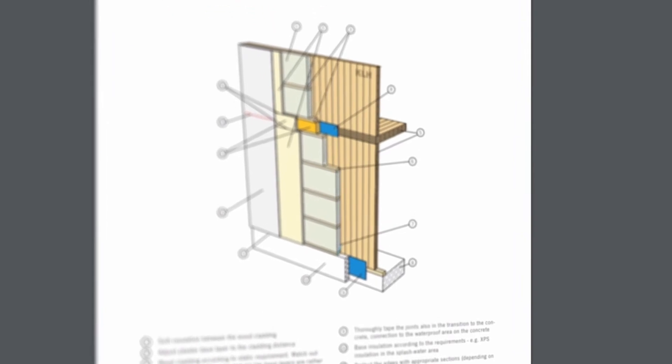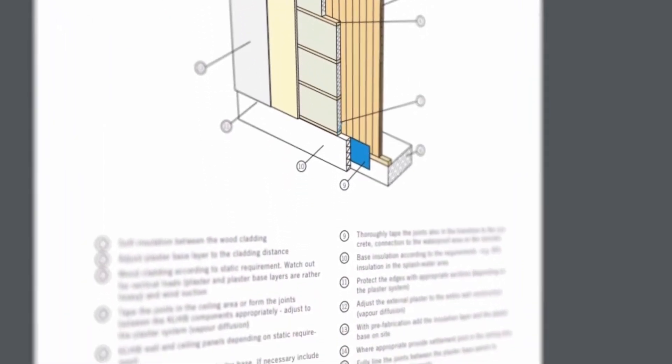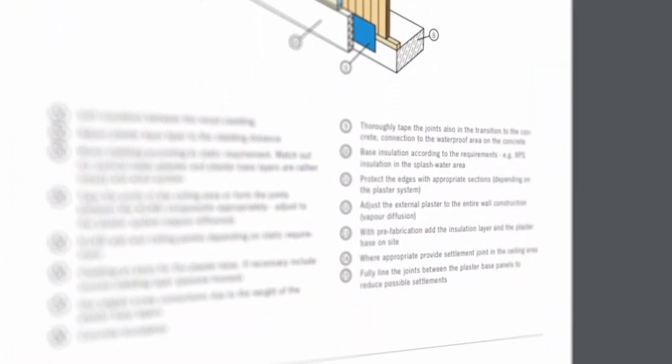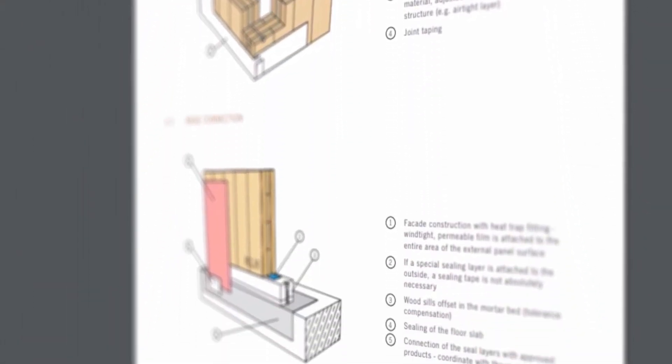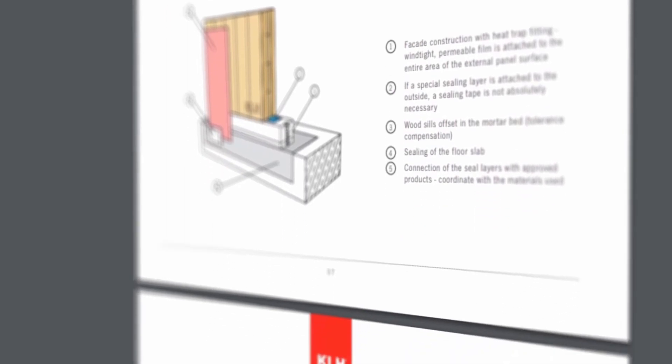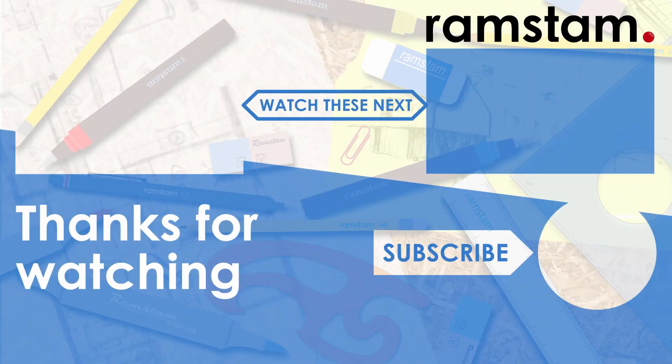As with most building components, it's important to work to the manufacturer's details and specification. KLH have very good information on their website covering construction connections and installation. If you want to know more about CLT, there are some links in the description below and in the course page, and there are links to some other videos relevant to this series.